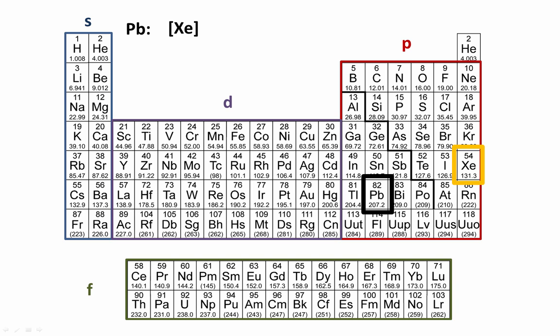To figure out what s subshell we're in, we count down 6 rows. To get to barium, we're filling 6s². The f subshell begins with 4, so it's 4f¹⁴. Then to get to mercury, we're filling 5d¹⁰.